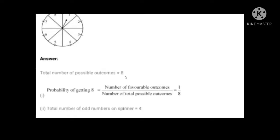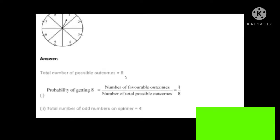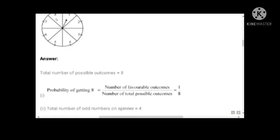Question one: probability of getting 8. In the spinner, the number 8 appears only one time. Total outcomes is eight and getting an 8 occurs only once. So probability of getting 8 is one by eight.